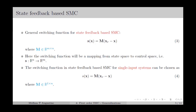In the case of state feedback-based SMC, the switching function is a function of the state error and can be chosen as in equation number 3, where Xr is the reference state and X is the actual state. The matrix M will be an M by N matrix, where M is the number of control inputs and N is the number of states — a mapping from the N-dimensional state space to the M-dimensional control space. For a single input system, the switching function is given as in equation number 4, a scalar value function called the sliding variable.